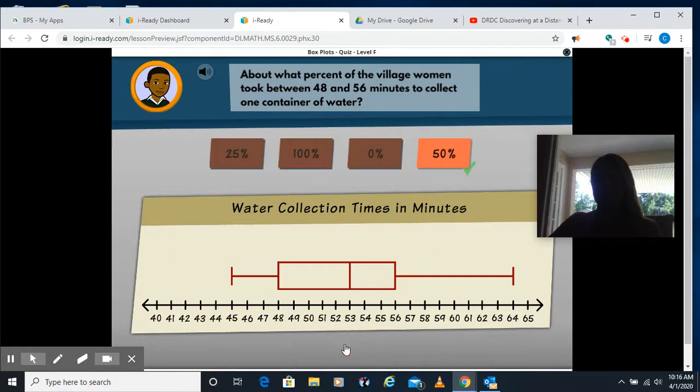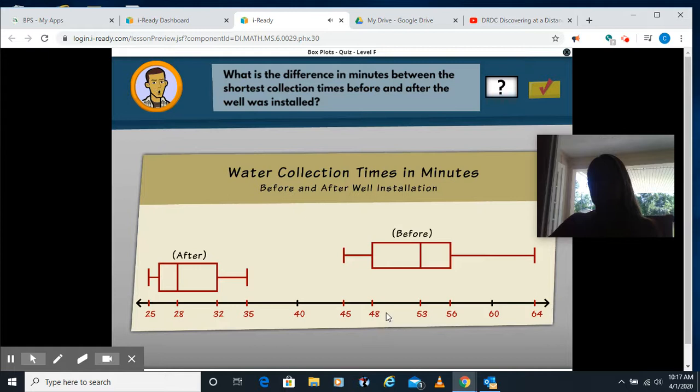So we're looking at the difference, so we're going to be subtracting between the before and after of the shortest time. So we have 25 as our shortest after time, and we have 45 as our shortest before time, so you need to find the difference between 45 and 25, which we know would be 20.